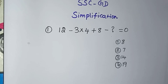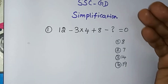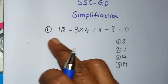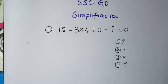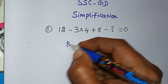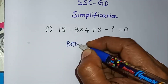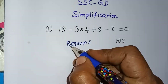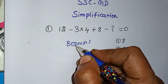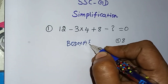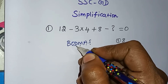SSC GD previous year simplification questions. First, we will get the basics of the BODMAS rule. In the BODMAS rule, this stands for: Bracket, Of, Division, Multiplication, Addition, Subtraction.